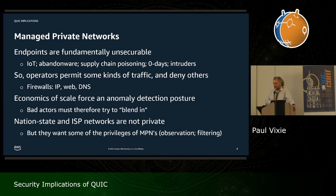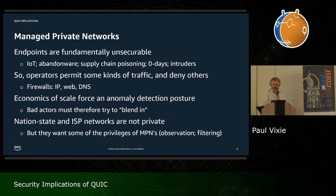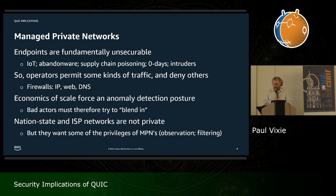Somebody said to me, 'Paul, the 1990s are calling — they want your firewall back.' I'll tell you why I still have a firewall: it's been a long time since I was able to trust anything I connect to my internal network, because the supply chain may have been poisoned, the company who made that IoT device may be long out of business with no patches, or it could have bugs that are well-publicized. Generally speaking, the stuff we can connect to our networks today is untrustworthy — and I include my own laptops in that.